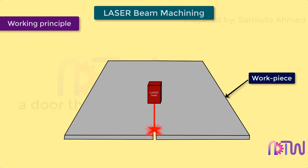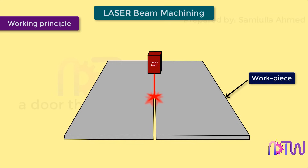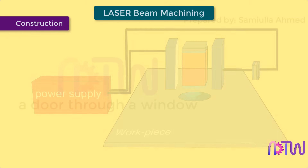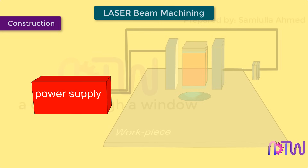Working principle: in this machining process, as the laser beam strikes the surface of the workpiece, the heat energy from the laser beam is transferred to the workpiece. This absorbed heat energy melts and vaporizes the material from the workpiece surface. Construction: the laser beam machine consists of the following parts.